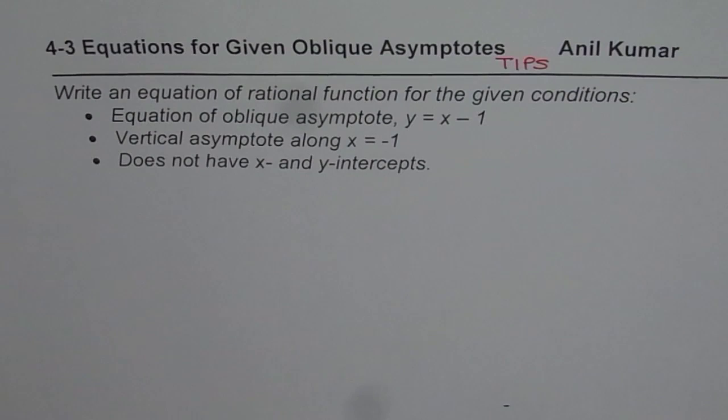Then we have vertical asymptote along x = -1 and it does not have x and y intercepts. So these are the three conditions given to you. Based on these conditions, you need to write a rational function.